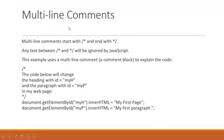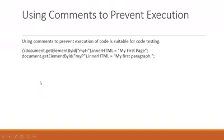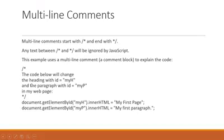The next is multi-line comments. Multi-line comments are normally used for explaining code. They start with slash-star (/*) and end with star-slash (*/). For example, this is a multi-line comment: /* The code below will change the heading with ID 'myAge' and the paragraph with ID 'myP' on my webpage. */ So this is the multi-line comment for these statements.